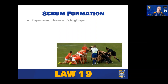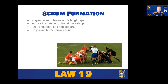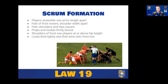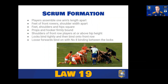For scrum formation, teams set up one arm's length apart by law. Front row players have feet shoulder-width apart, feet, shoulders and hips square. Props and hooker are firmly bound. Shoulders of front row players must be at or above hip height and maintained throughout. Locks bind tightly onto the front row. The number eight must bind between the locks — this is written in law, so be mindful of the number eight trying to change channels. Binding between a lock and a flanker is not permitted. All spines must be in line, parallel to the touchlines, pointing toward the opposition goal line.